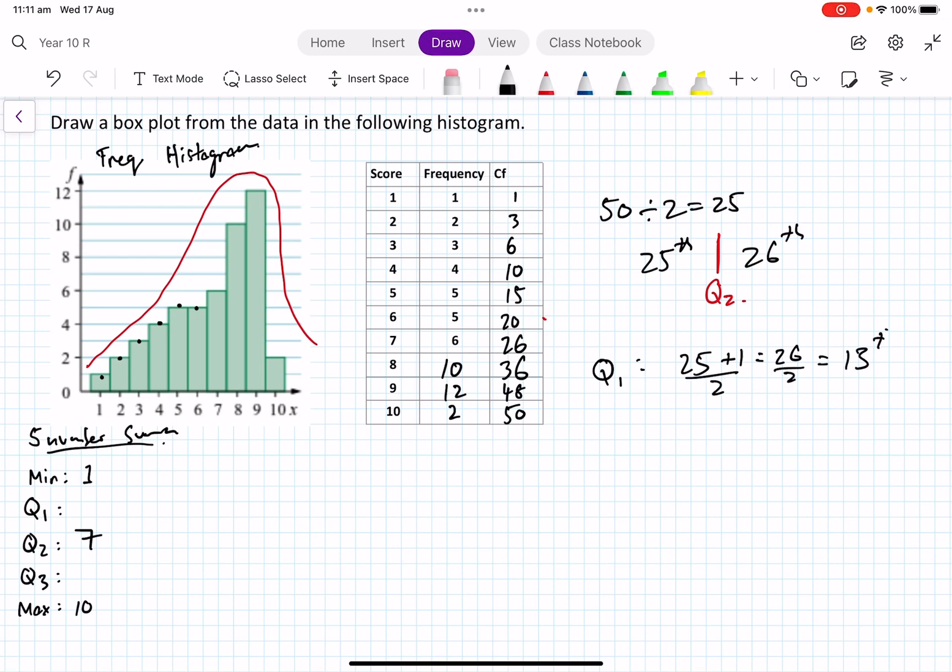And then if you divide that by 2, that's equal to 13. So the 13th score is what we're interested in. The 13th score sits here. That's where Q1 is going to sit because up to 10 is 4, and then the 11, 12, 13, 14, 15 scores are all 5. So Q1 is 5.